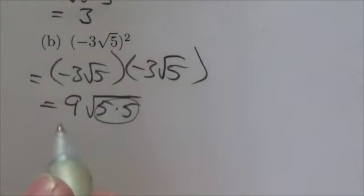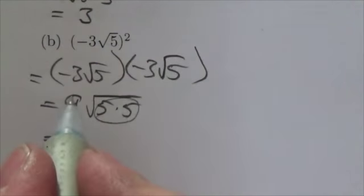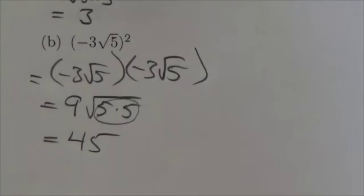And then I get root 5 times 5. There's two 5s in there, so I can pull that out, which basically empties out the radical. So there's nothing left over there. And I multiply that 5 by 9 to get 45.